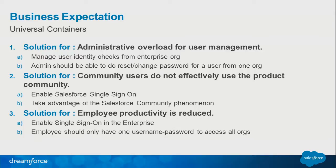What is Universal Containers thinking about solving this problem? For the administrative overload, they want a feature to manage user identity from one enterprise org — control users on other orgs from one place. If a new employee comes in, just provision them in the first org and it propagates to the others. If someone leaves the company, shut them out in the main org and it denies access to all orgs.